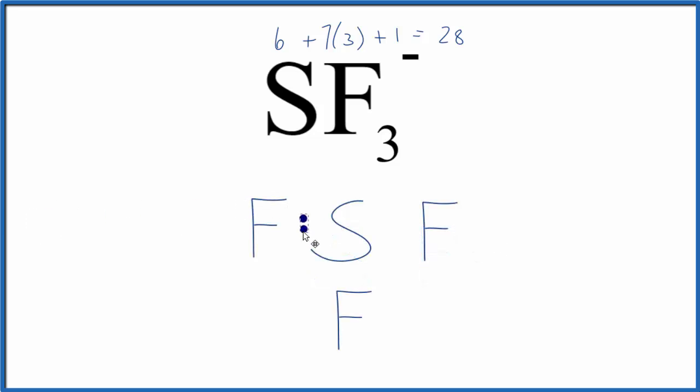Next we'll put a pair of electrons between atoms to form the chemical bond, and then we'll go around the fluorines and complete their octets.